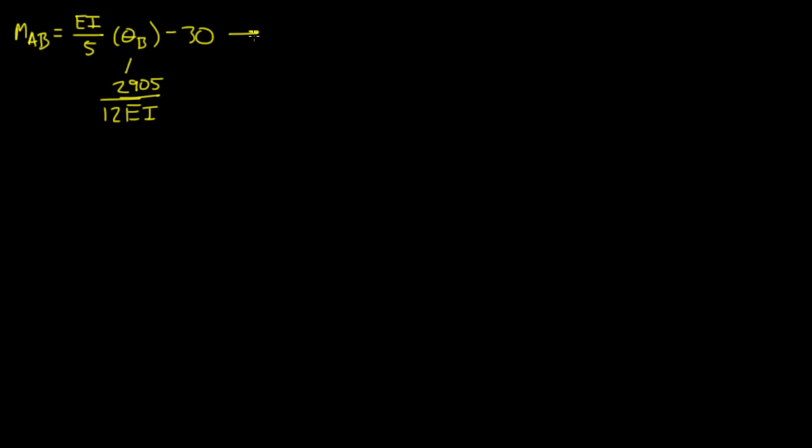So if you plug that in, you get EI over 5 times 2905 over 12EI minus 30. Now you see the EI actually just cancels out. And if you solve this out, you should get the moment AB is equal to 18.42 kilonewton meters.